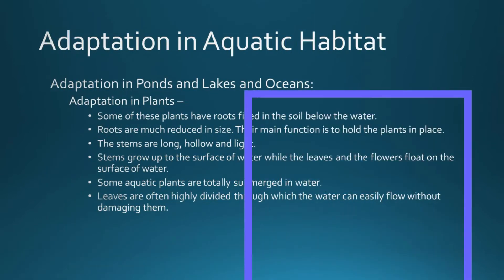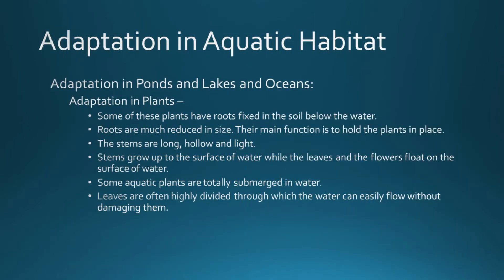In aquatic habitat, the plants and animals which live and grow in water — ponds, oceans, lakes — we will discuss the adaptation of that type of living organism. In plants, some have roots which are fixed in the soil below the water. For example, Lotus — the roots are fixed to the soil and the plant has a long stem, with flowers and leaves floating on the surface of water.